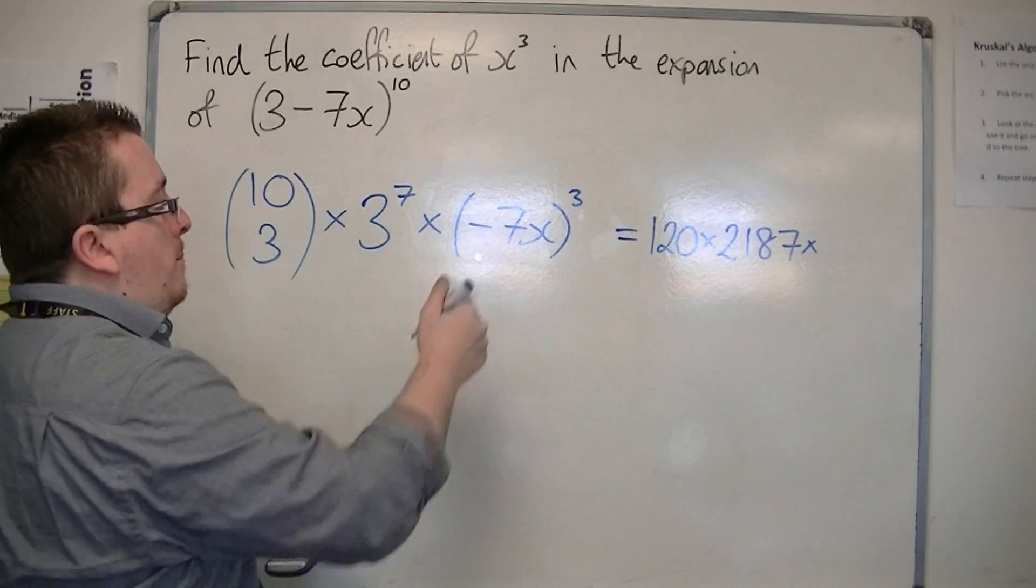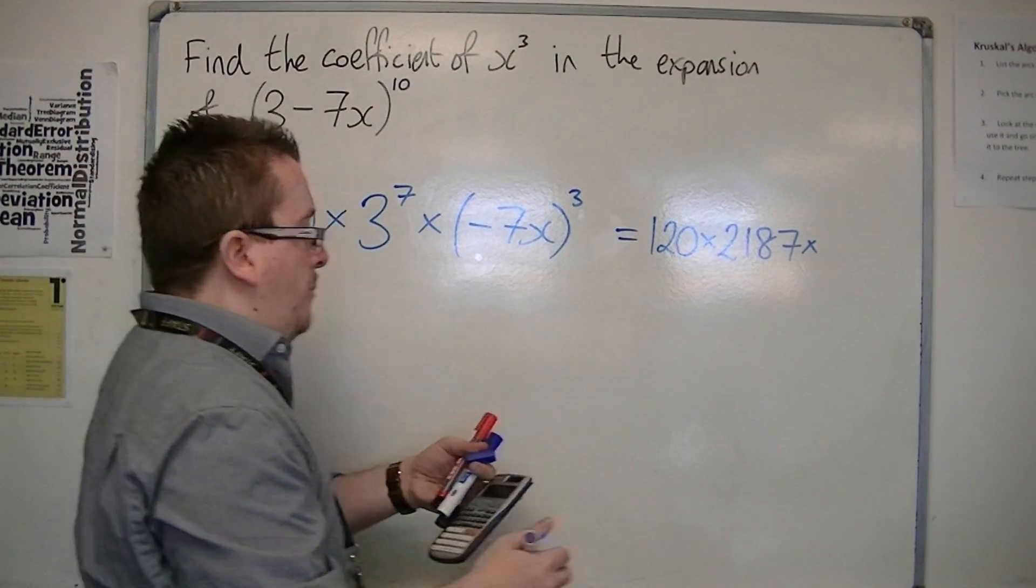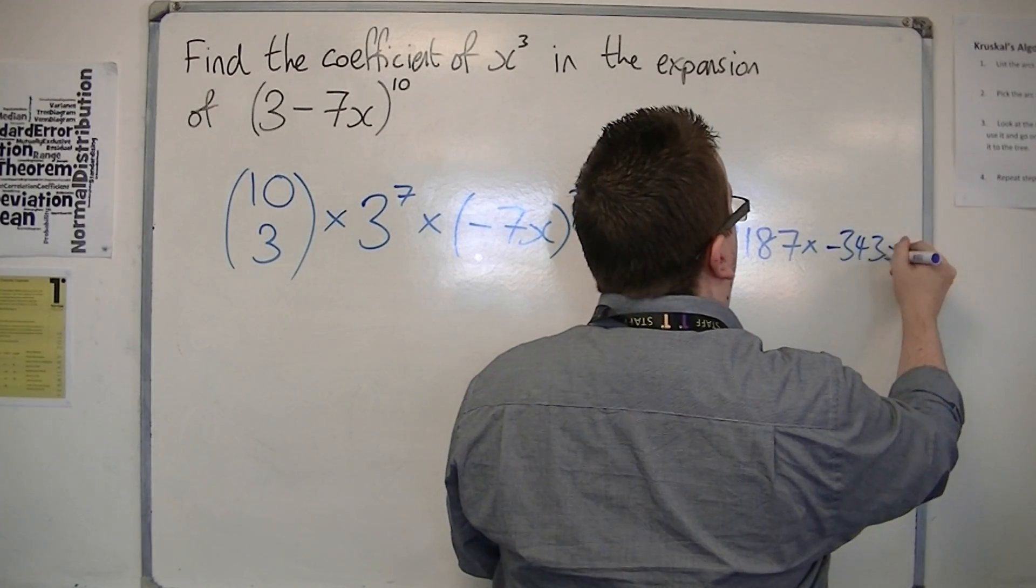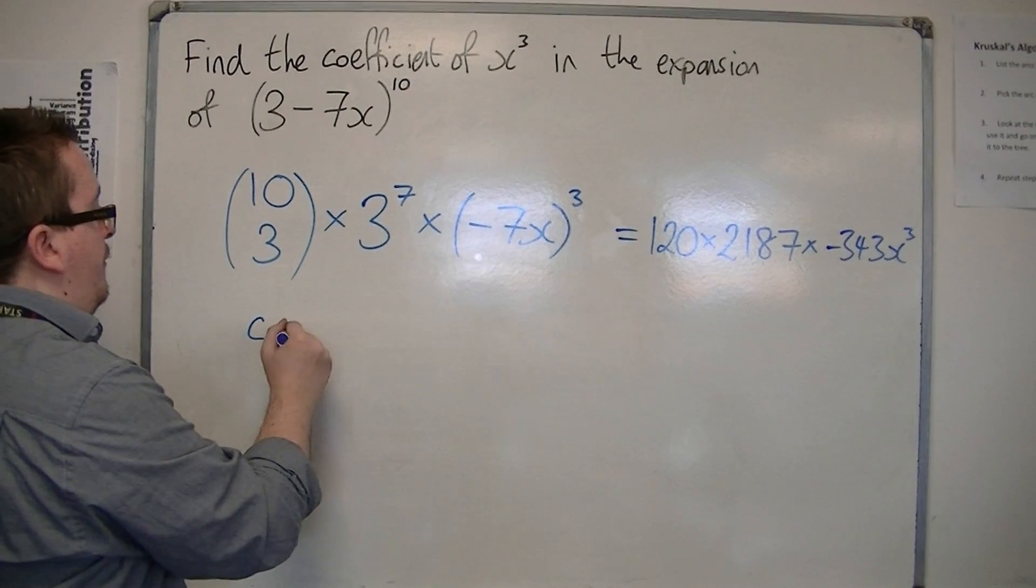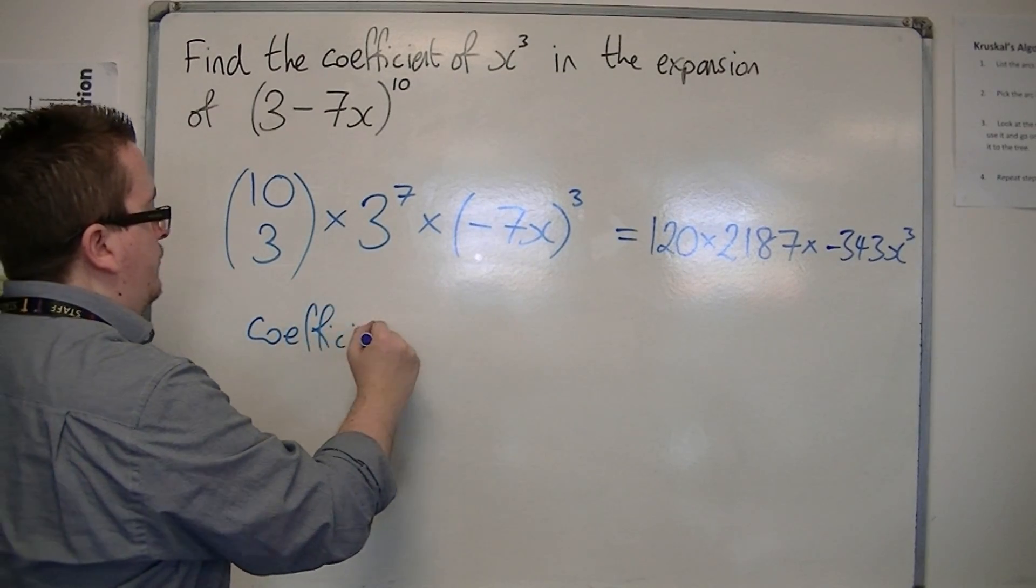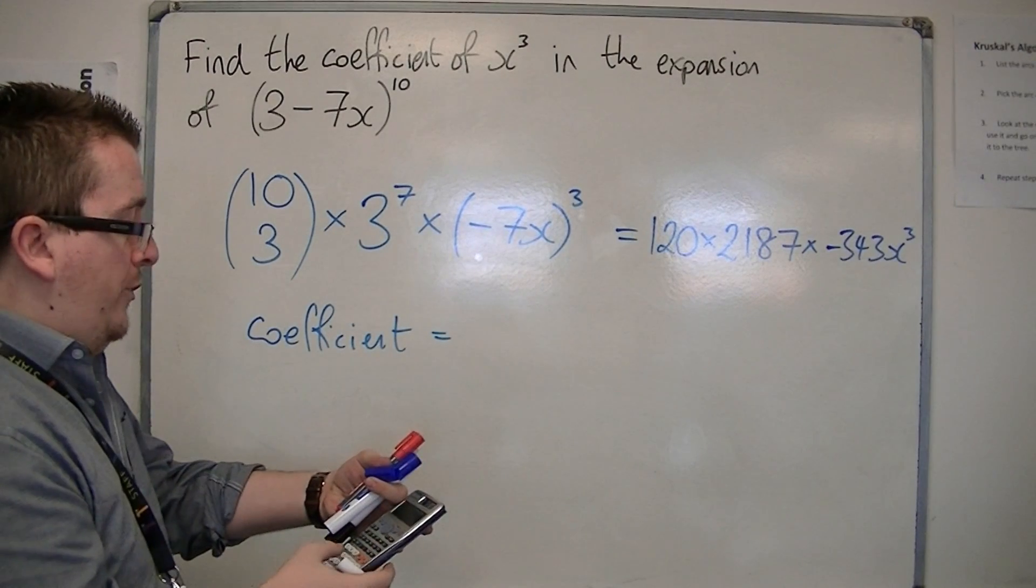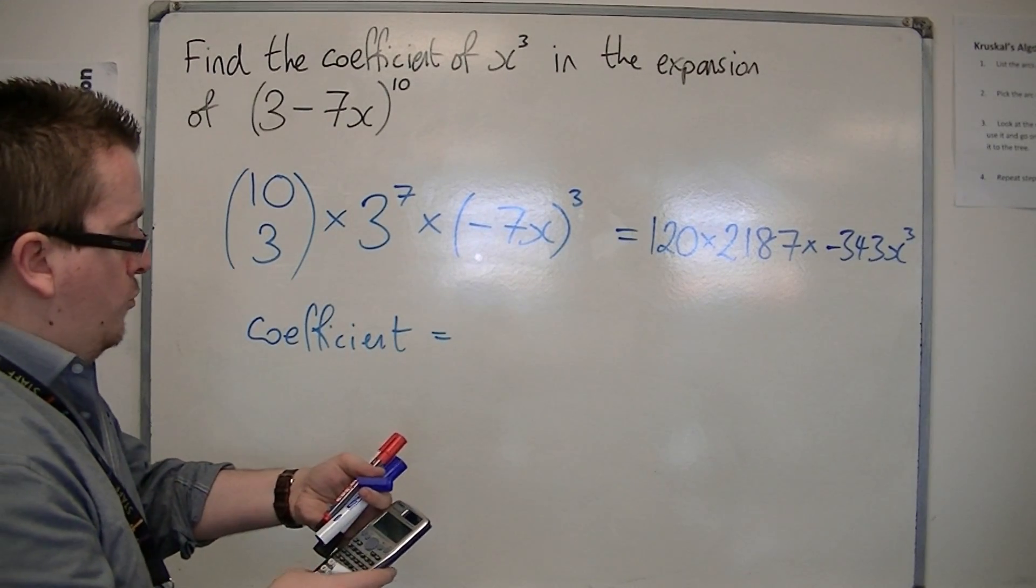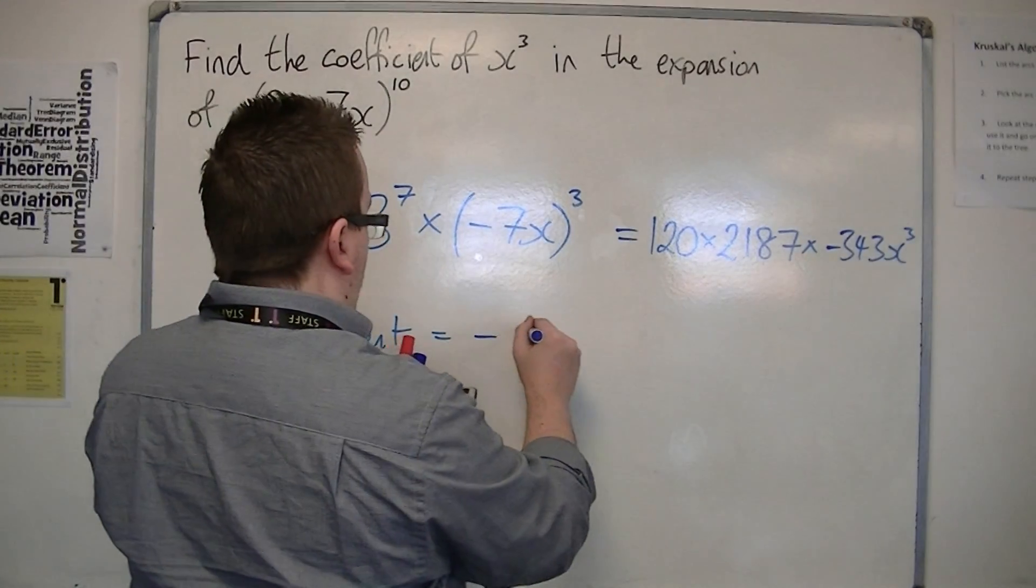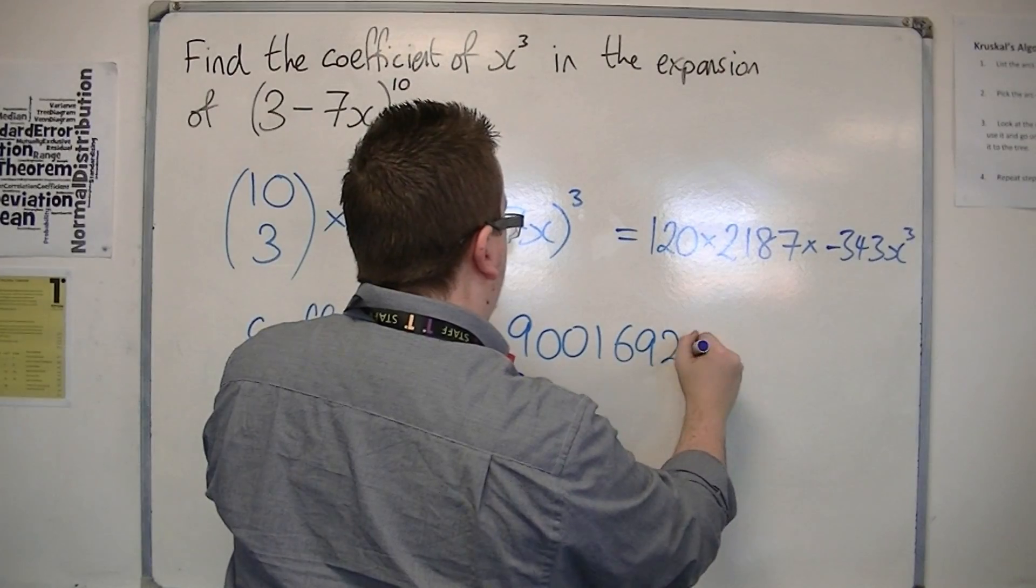And then we've got minus 7 cubed, which is minus 343, and we've got that x cubed. So the coefficient is equal to those three terms, minus 343 times 2187 times 120, which is minus 90016920.